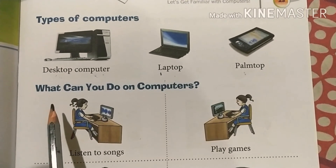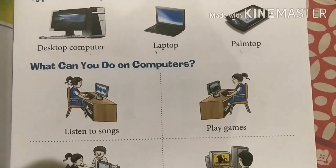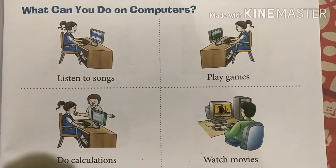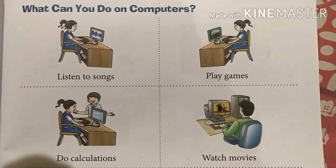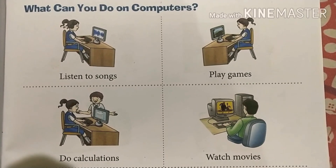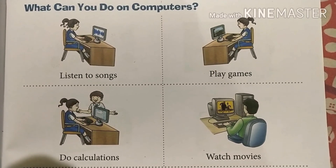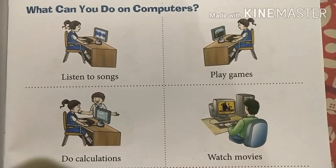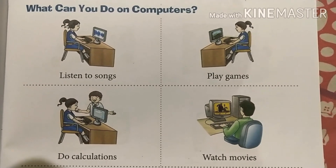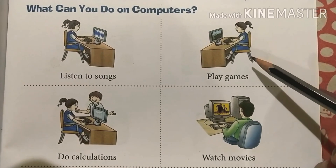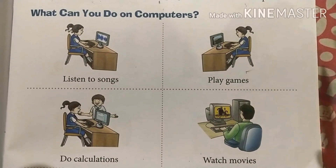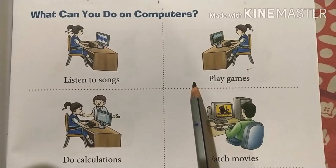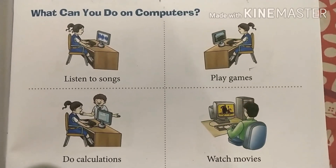What can you do on computers? Here you can learn what you can do on computers — aap computers pe kya kya kar sakte hain. First: listen to songs — hum computer pe songs sun sakte hain, songs upload karke phir sun sakte hain. Next: play games — uspe games bhi khel sakte hain, games download karke khel sakte hain.